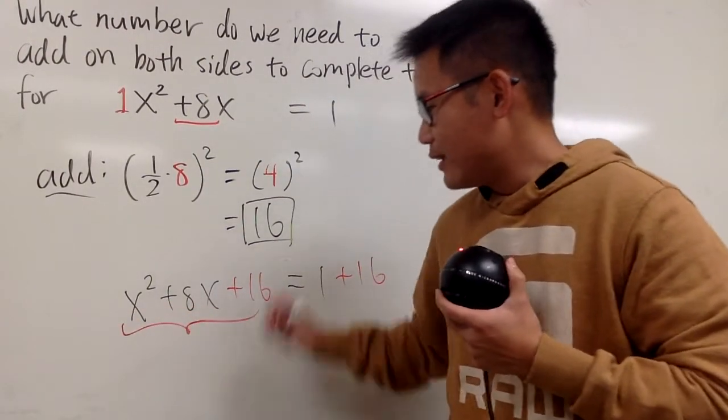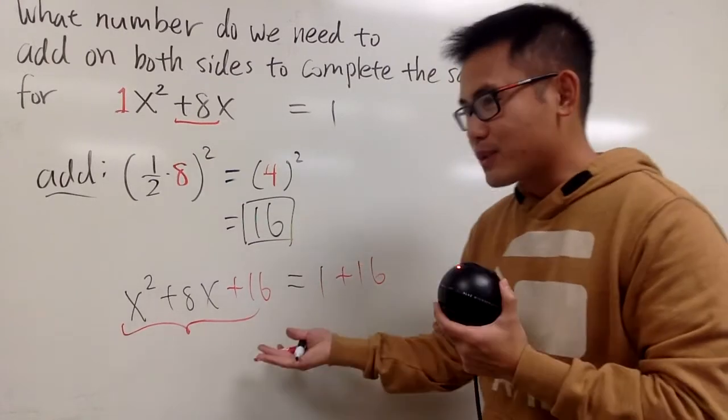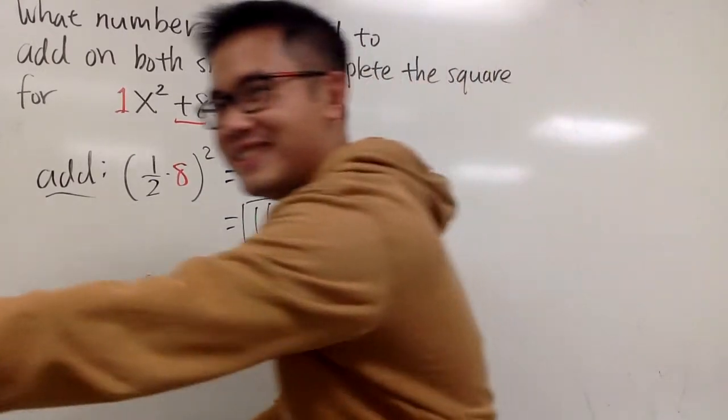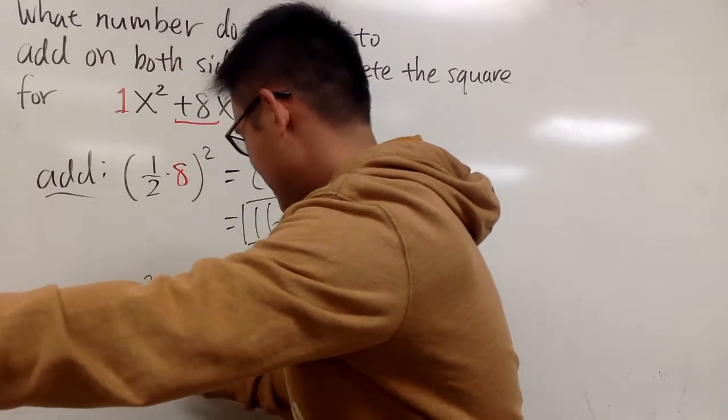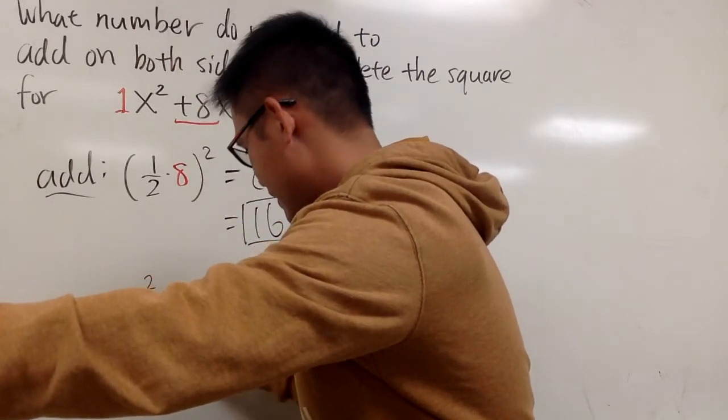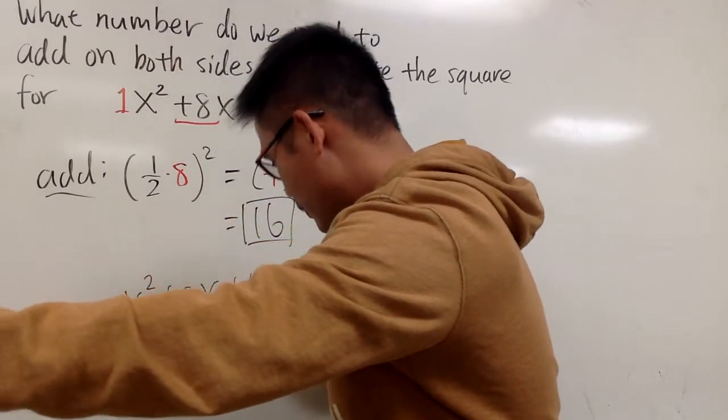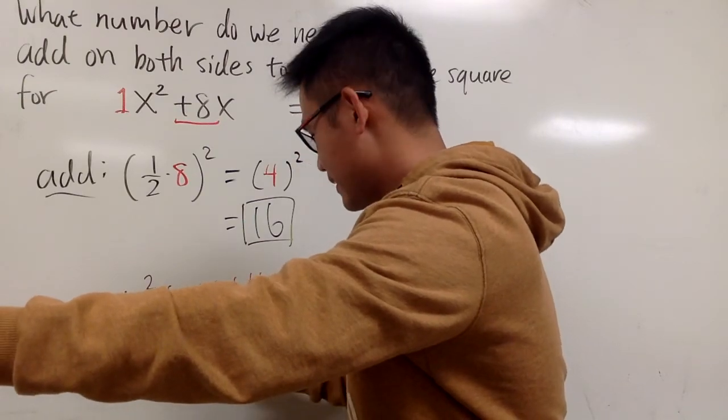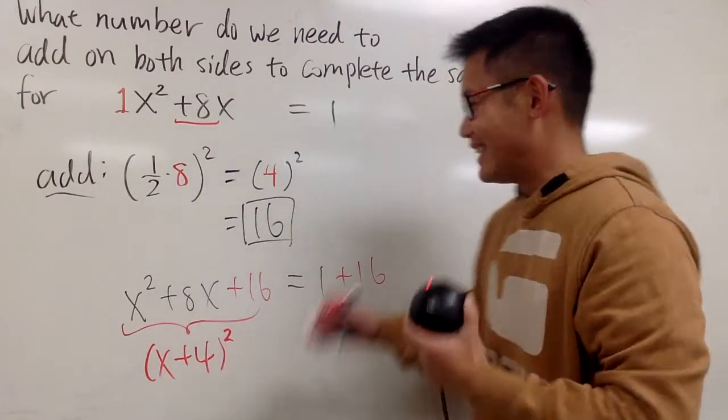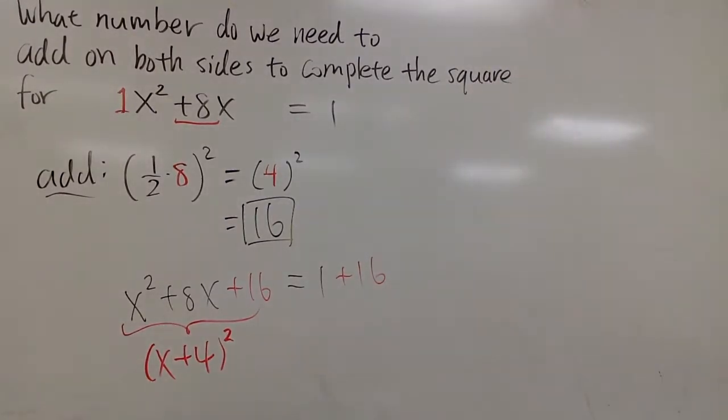The left-hand side, we can factor it, and we will get a perfect square. And what's the factoring for this? x plus 4, x plus 4. And which we can write this down as x plus 4, square. That's a perfect square, and that's it. Yay!